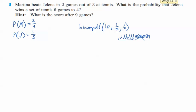And so, that's a problem with what we have. So, that's why there's the hint here that says, what is the score after nine games? Because after nine games, in order for them to get to six to four, then that means that Jelena is going to have to win the last game, right? So, therefore, after nine games, it has to be five for Jelena and four for Martina, right? It has to be that situation.